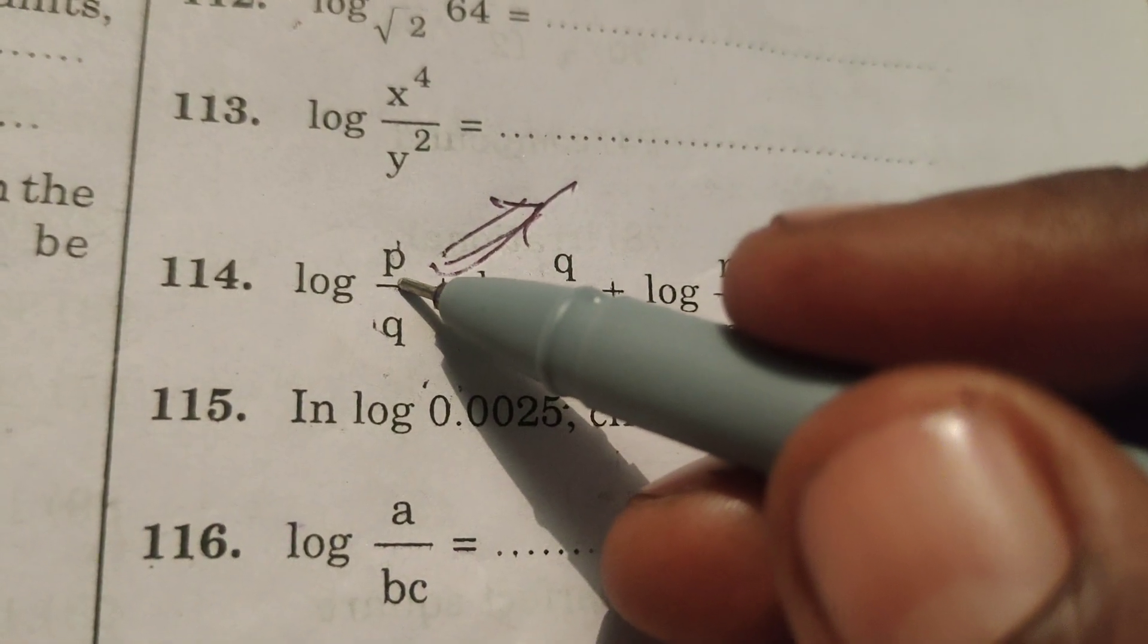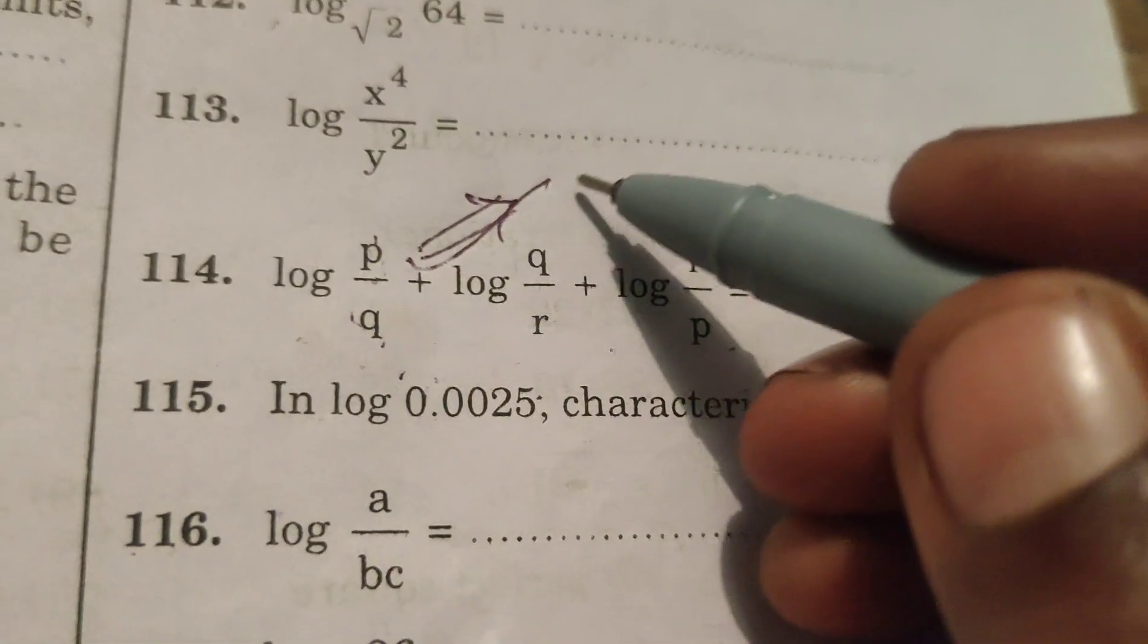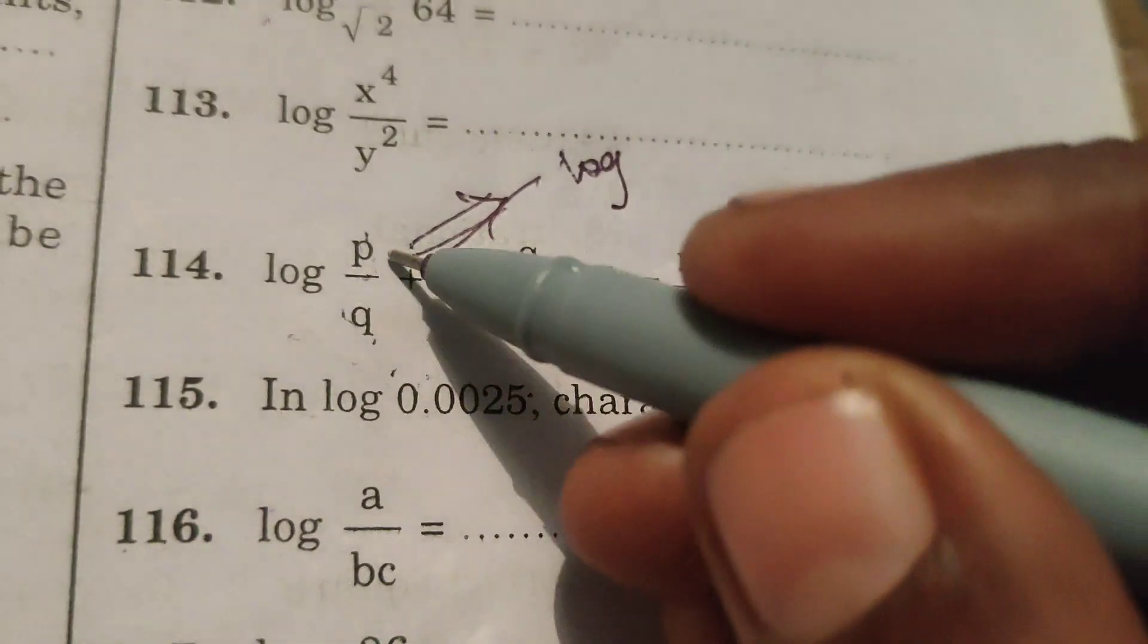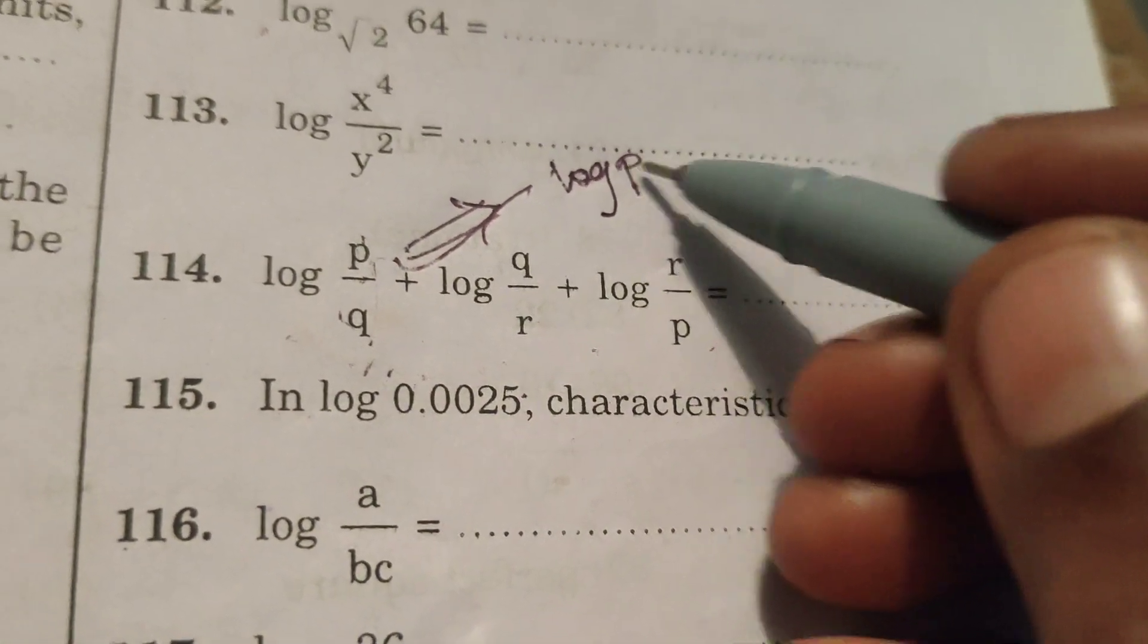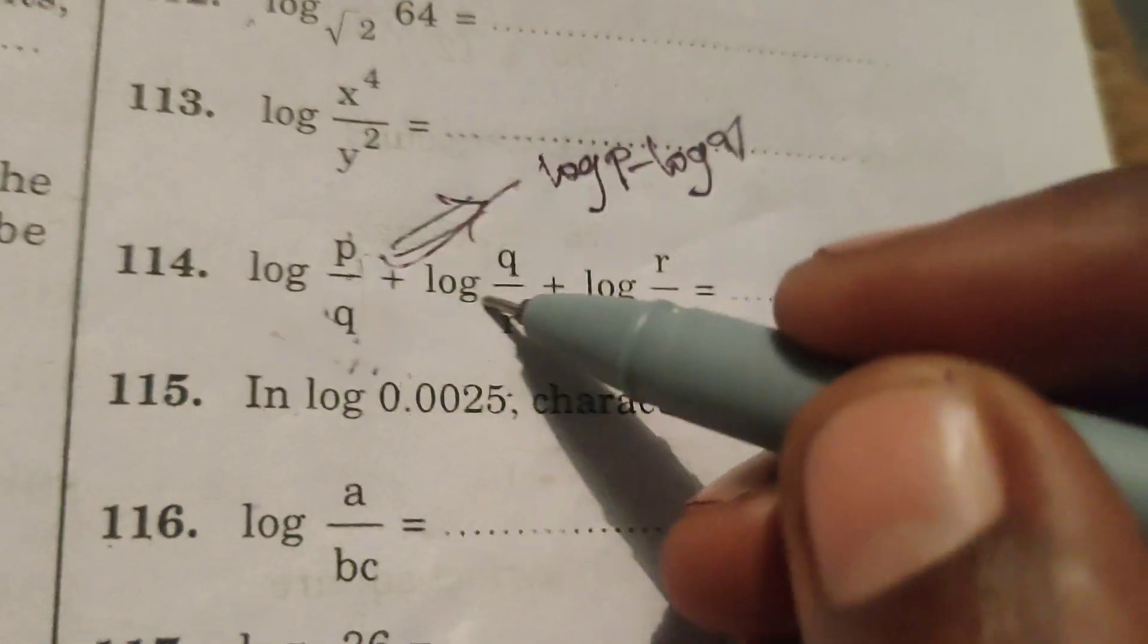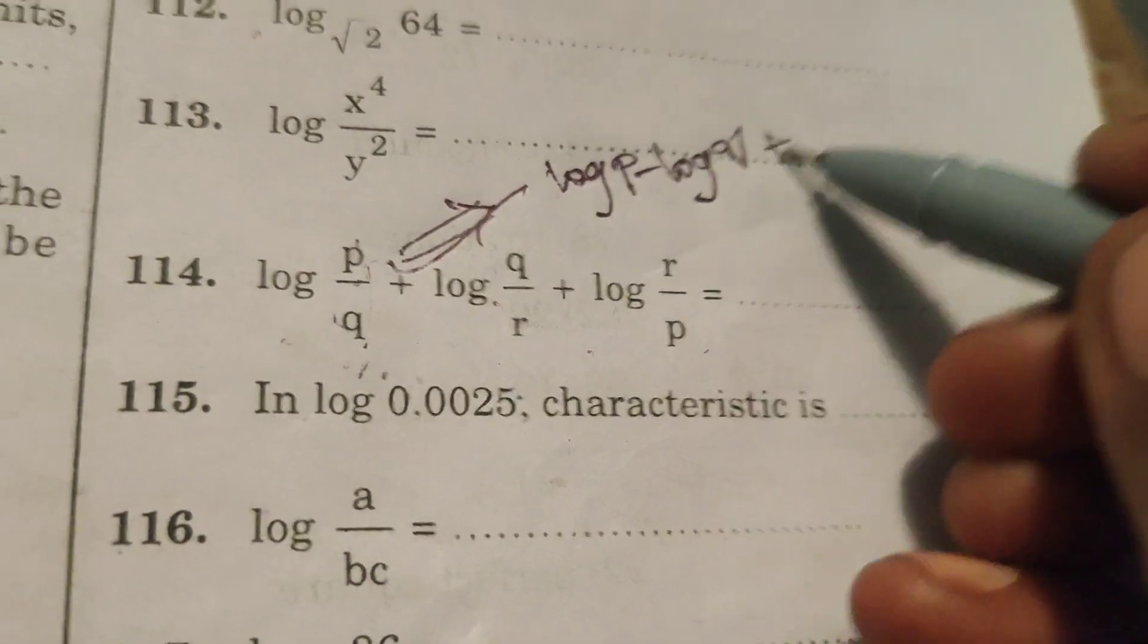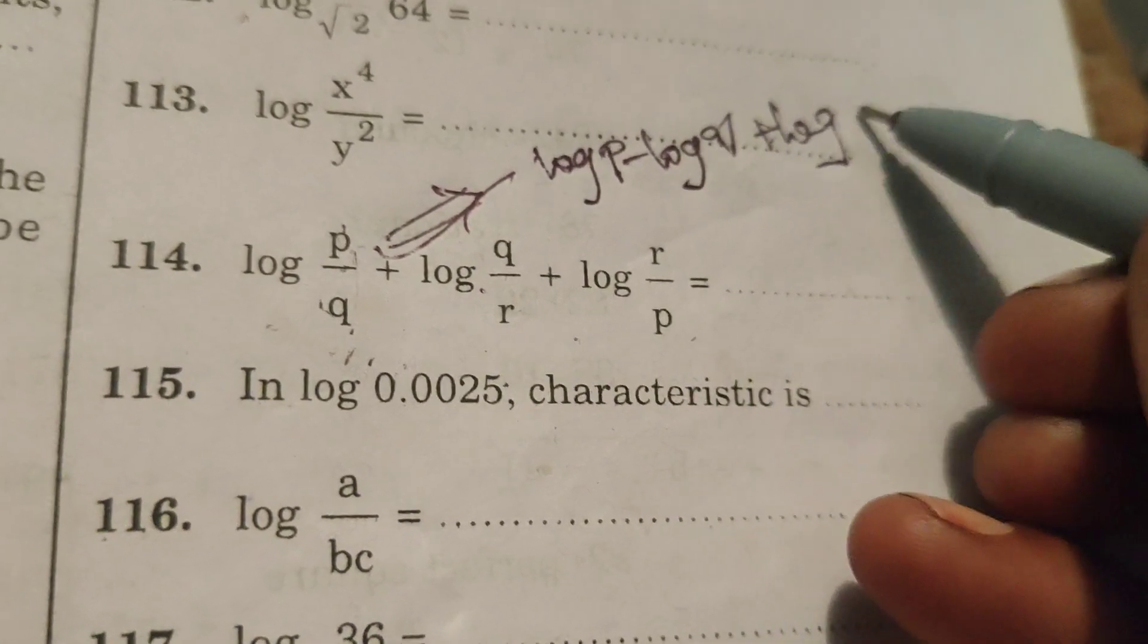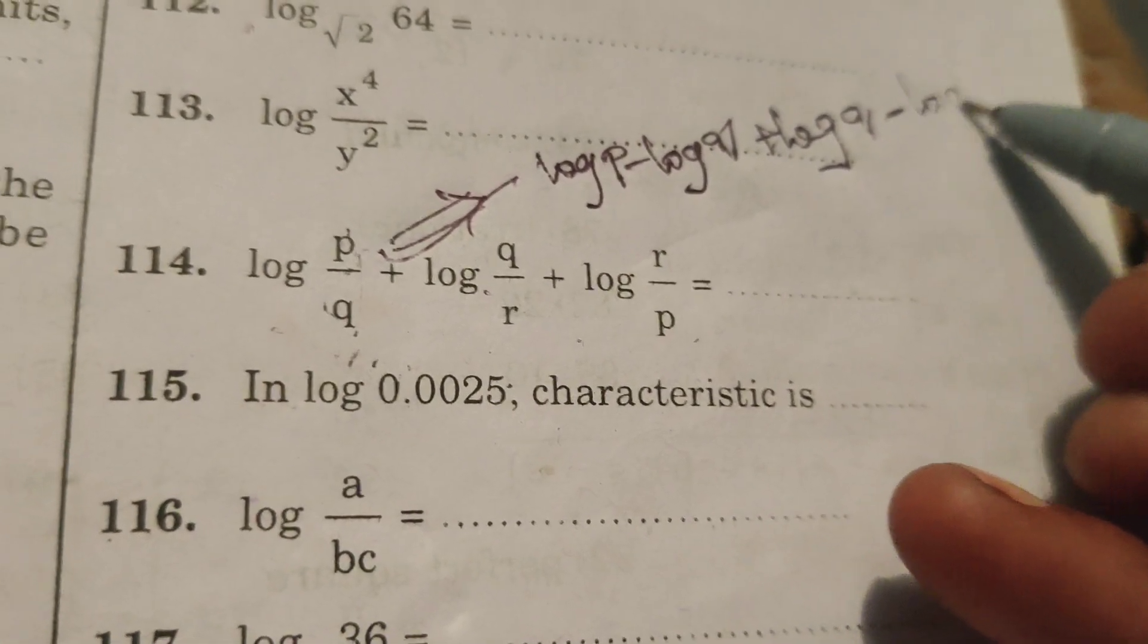Here, using the formula log A by B, that is log A minus log B. Here P by Q is there, log P minus log Q. Here, also using the same formula, log Q minus log R.